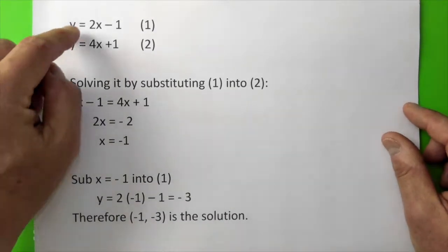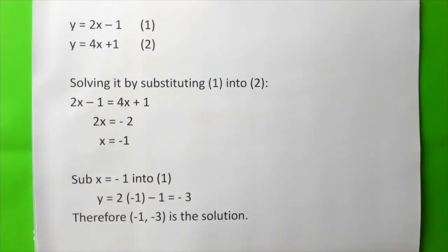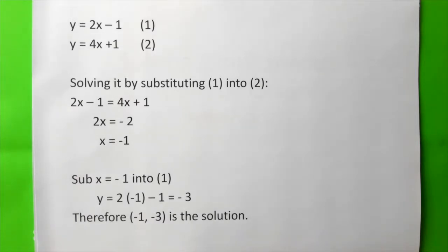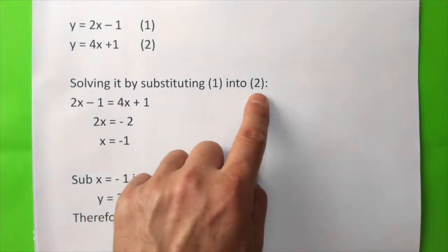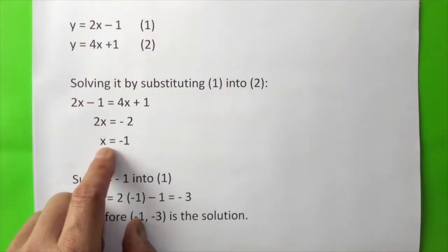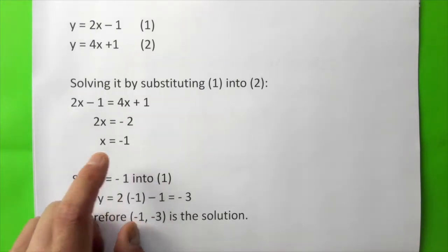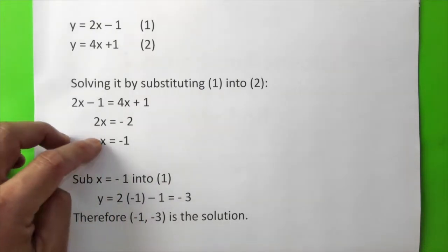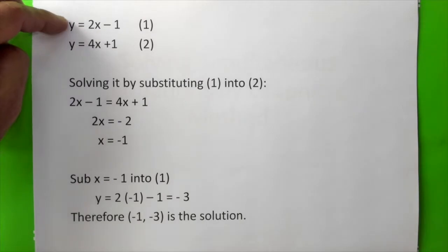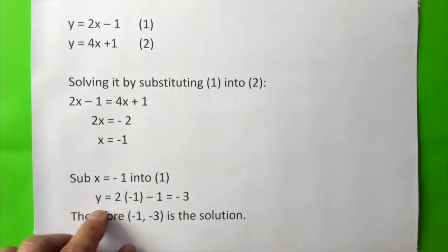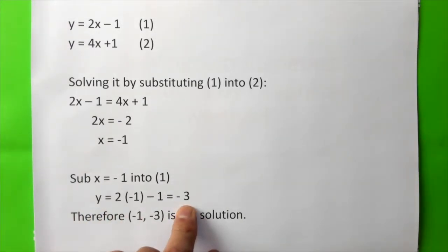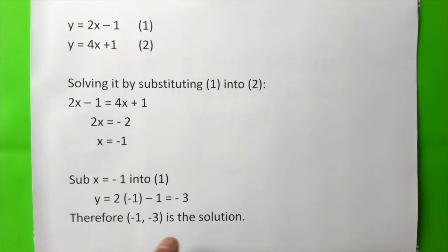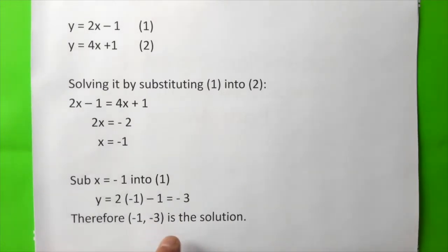Let's have a look at the two equations: y equals 2x minus 1 and y equals 4x plus 1. We can solve the simultaneous equations by substituting equation 1 into equation 2 and obtain x equals minus 1. When we substitute x equals minus 1 into equation 1, we get y equals minus 3. Therefore, (minus 1, minus 3) is a solution.